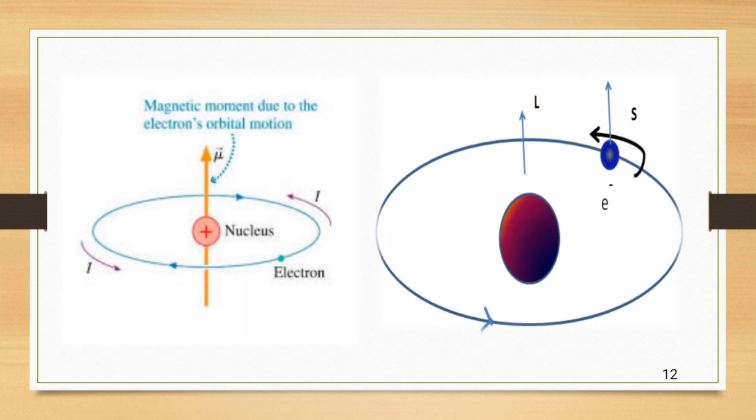Second one is this diagram which is showing the electron movement around the nucleus and creating magnetic moment due to electron's orbital motion around the nucleus.